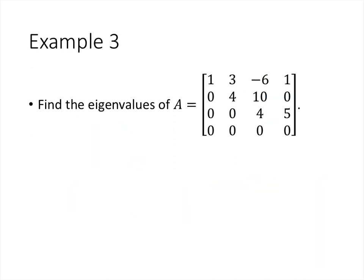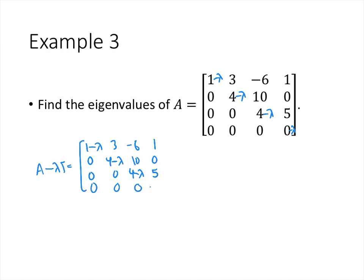Let's do another example, this time with a 4 by 4 matrix. A minus lambda I means subtracting lambda from all the diagonal entries. The resulting matrix is [1 minus lambda, 3, negative 6, 1; 0, 4 minus lambda, 10, 0; 0, 0, 4 minus lambda, 5; 0, 0, 0, negative lambda]. Good news: this is a triangular matrix. The determinant of a triangular matrix is simply the product of all its diagonal entries.